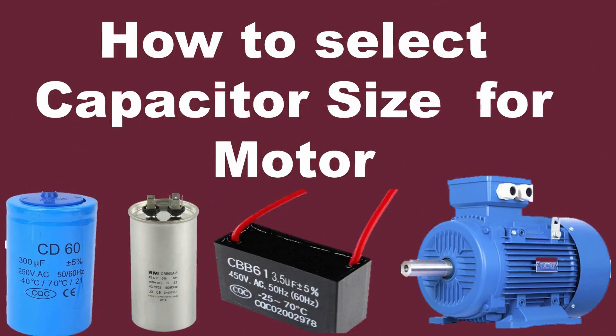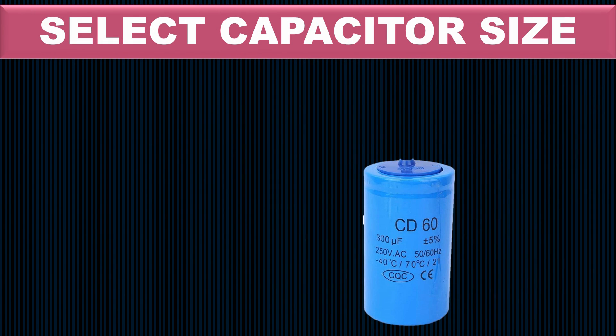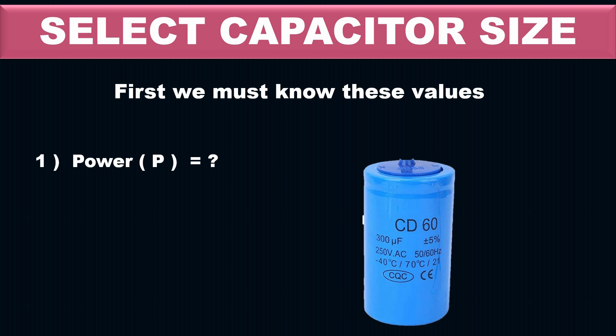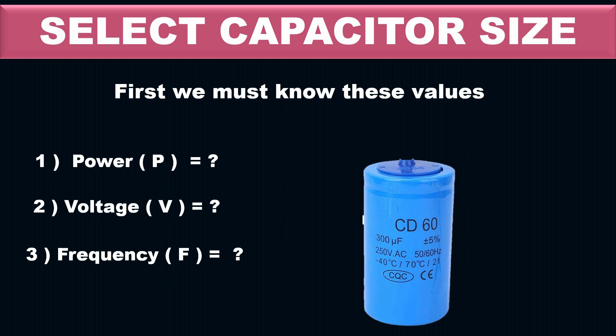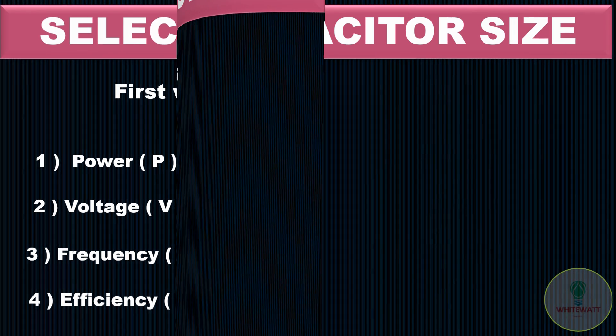Hello guys, welcome to my YouTube channel. Today our topic is how to select capacitor size for a single phase motor. To select the capacitor size, first we must know these values: number one, power; number two, voltage; number three, frequency; number four, efficiency of the motor. Efficiency is always mentioned on the motor nameplate.